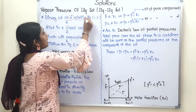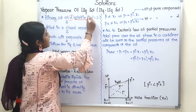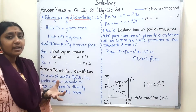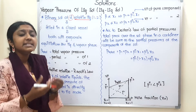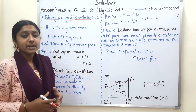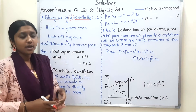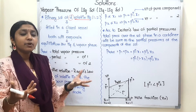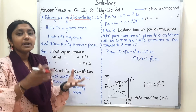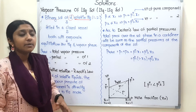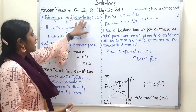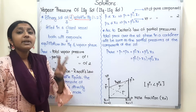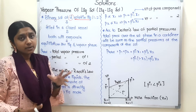We will get two volatile liquids. What is the name of volatile liquids? It is very easy to evaporate. When it is very easy to evaporate, we call those liquids volatile liquids. So that means we will get two volatile liquids.